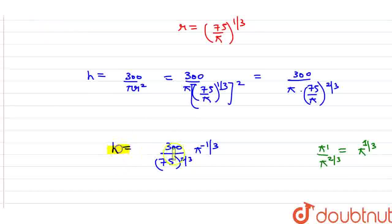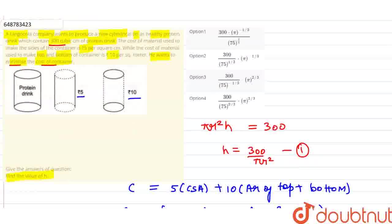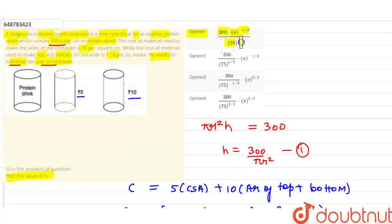So basically the final result is h = 300 × π^(-1/3) / 75^(2/3). Since π goes to the numerator as π^(-1/3), option number 1 is the right answer: h = 300 × π^(-1/3) / 75^(2/3). Thank you friends.